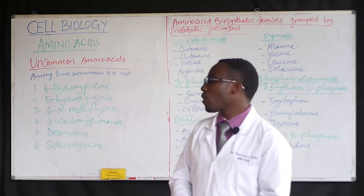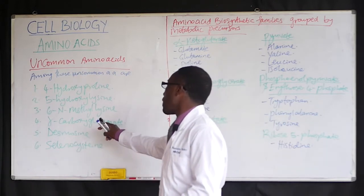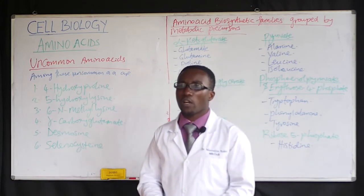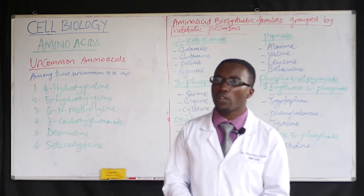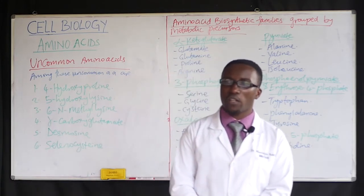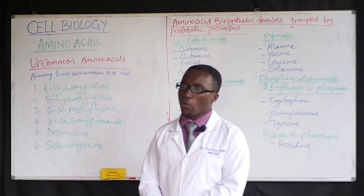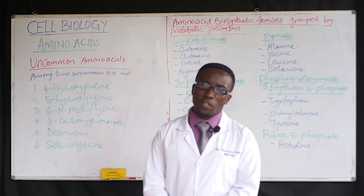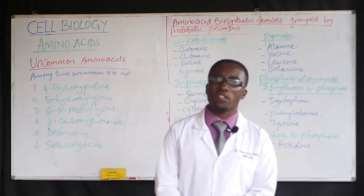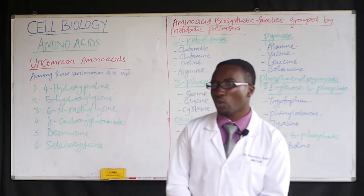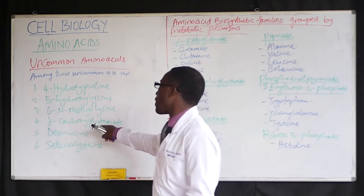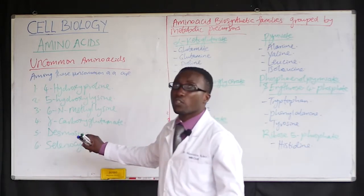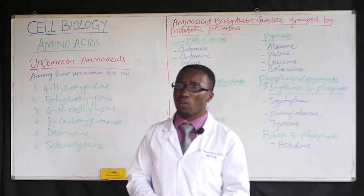Gamma-carboxyglutamate, or gamma-carboxyglutamic acid, is found in the blood-clotting protein prothrombin and in certain other proteins that bind calcium as part of their biological function. Vitamin K plays a key role in the gamma-carboxylation of glutamic acid that enables this clotting function.